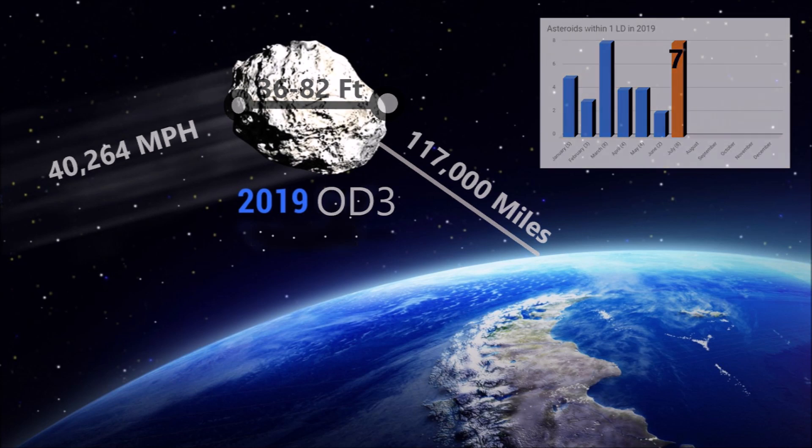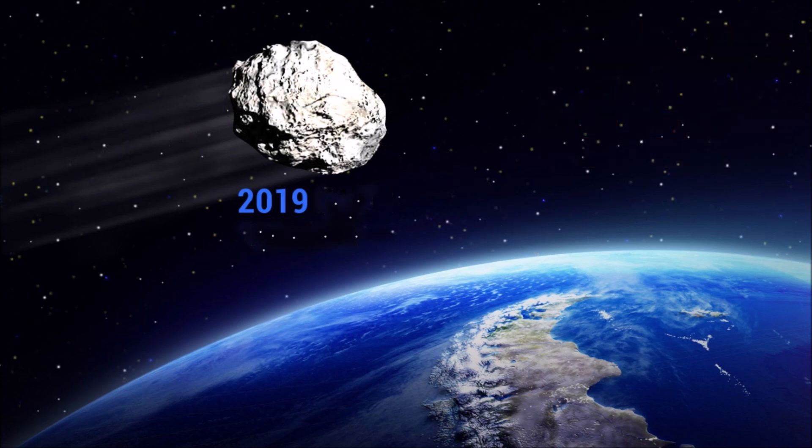Then on July 29th, a space rock that belongs to the Apollo group of asteroids, designated 2019 ON3, flew past Earth at a distance of 131,997 miles, as observed by the Pan-STARRS 2 telescope in Hawaii. Its estimated diameter was between 24 and 52 feet and it was traveling at 31,675 miles per hour.